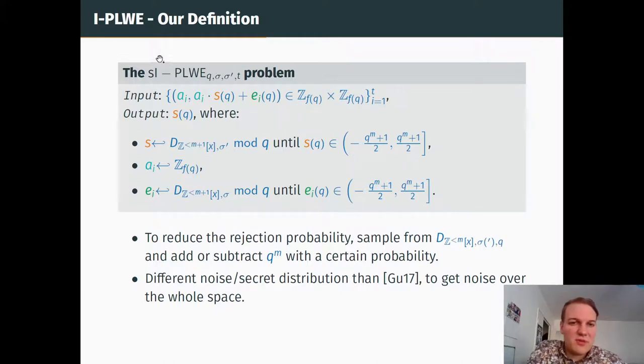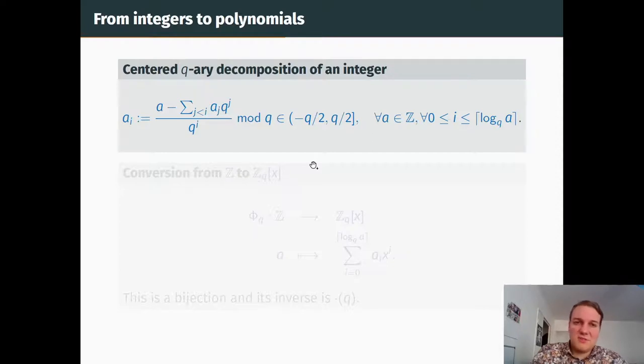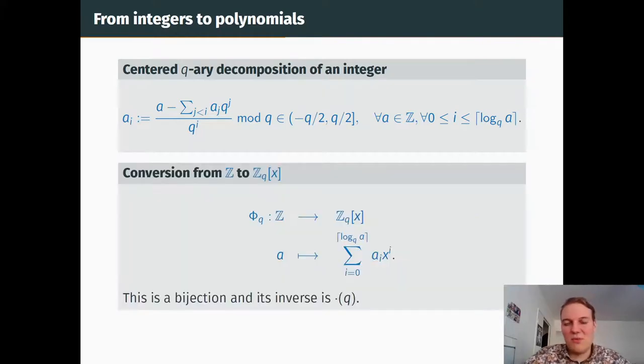We've seen how to go from polynomials to integers, but how do we go from integers to polynomials? The idea is to write the q-ary decomposition of integers, but to center the coefficients. Instead of taking coefficients in 0, q-1, we take them in minus q over 2, q over 2. With this definition, we can also decompose negative integers. The map phi_q is defined as the map which to an integer a maps the polynomial whose coefficients are the coefficients of the q-ary decomposition. It's a bijection and its inverse is simply the polynomial evaluation.